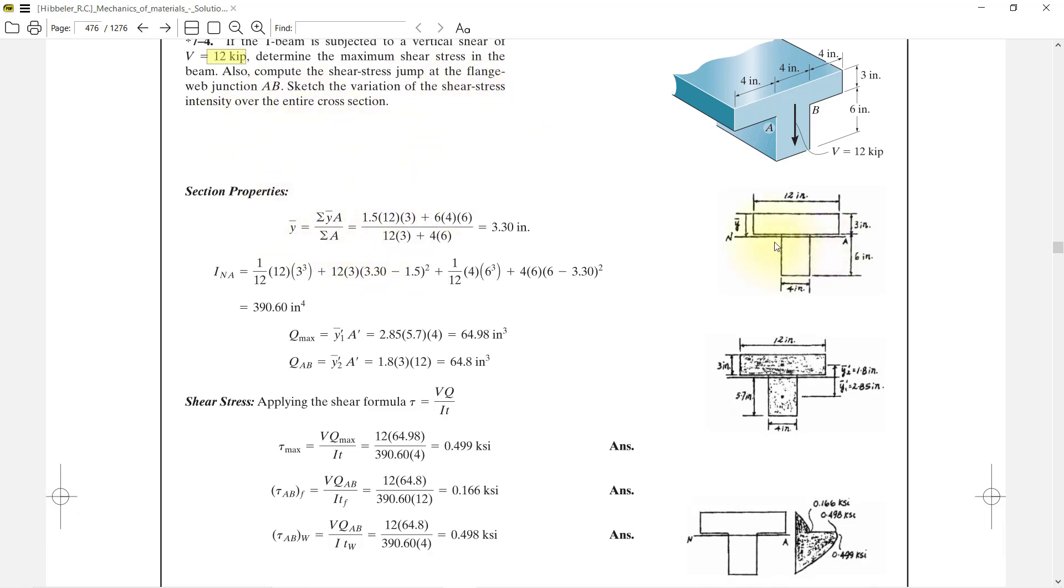First we will define our axes. X is in the middle because it is symmetric about Y. We will find ȳ by multiplying area times distance. This area 1 times area 2, so 12 multiply by 3, and this half is 1.5. We get ȳ is 3.3, means it will go up to the AN line.